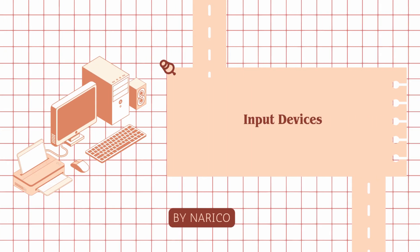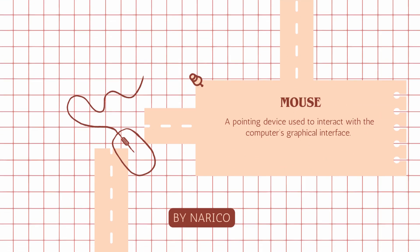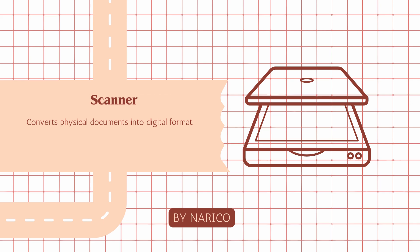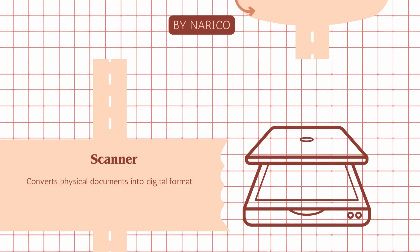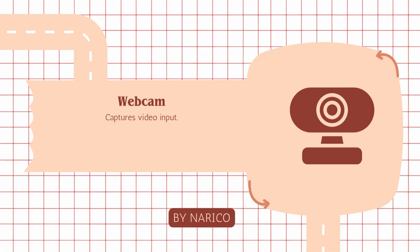Input devices are devices used to enter data into a computer system. Keyboard: used for typing text and commands. Mouse: a pointing device used to interact with the computer's graphical interface. Scanner: converts physical documents into digital format. Microphone: captures audio input. Webcam: captures video input.